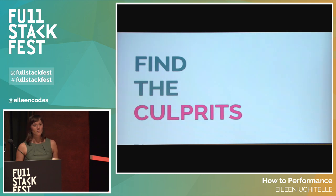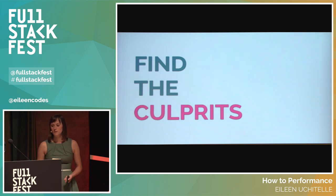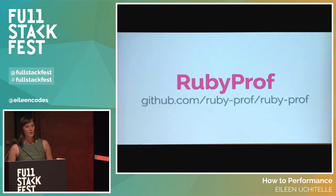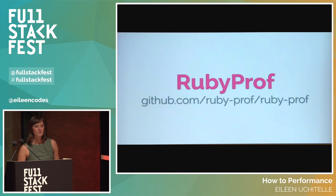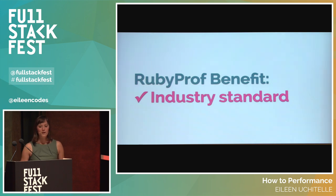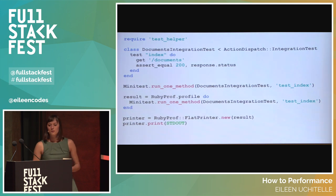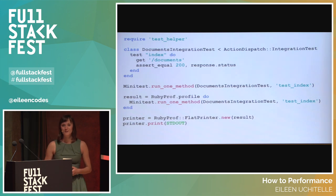The next step is to find out what's slowing down our code. We can't just go changing things without knowing what the culprits are. The first gem that I used to profile the integration test stack trace was RubyProf. RubyProf requires Ruby 1.9.3 or higher and it's faster than other Ruby profilers because it's a C extension. RubyProf has been around a lot longer than other profilers, first being released eight years ago.